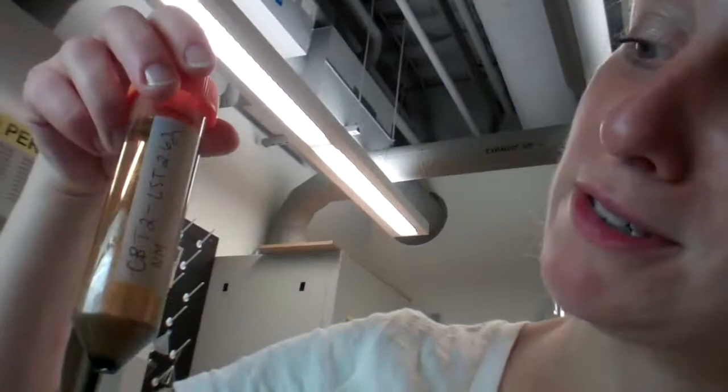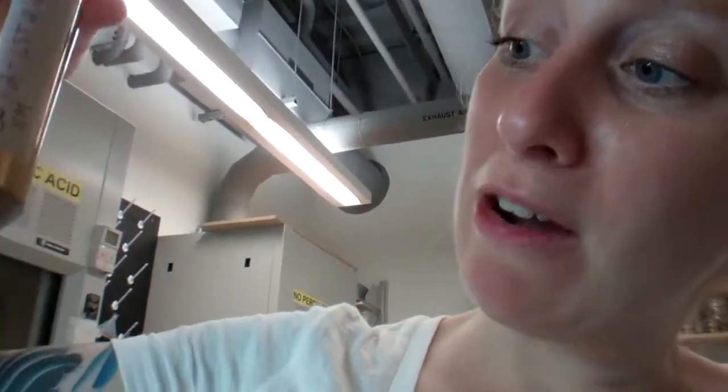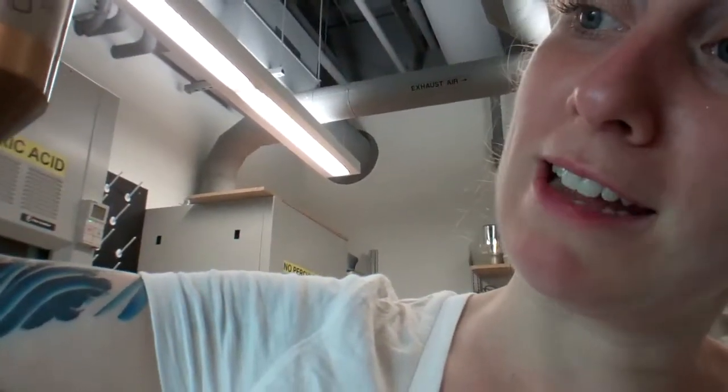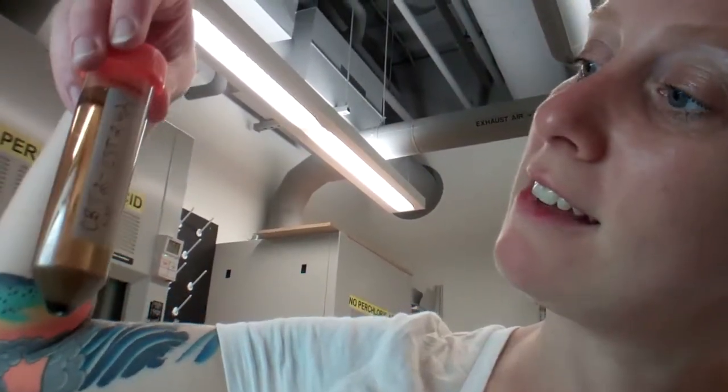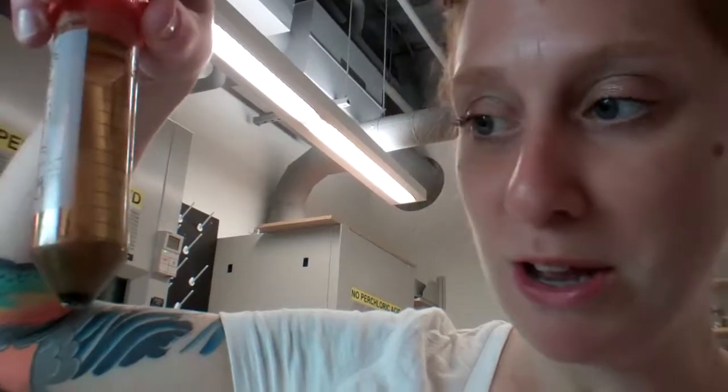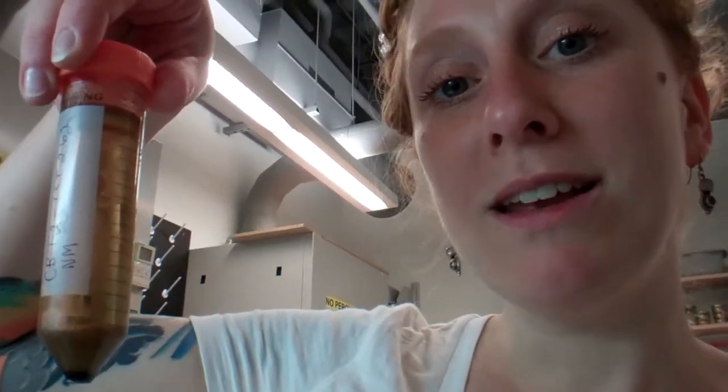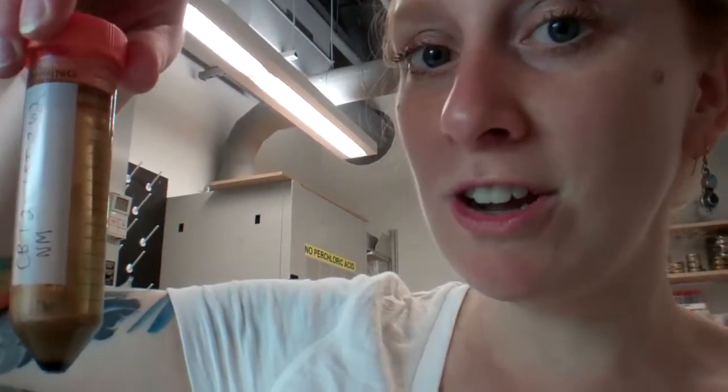Alright, so I have my sample CBT2 which was dry sieved and water sieved after being crushed, and now it's been sitting in LST 2.62. Everything that's more dense than 2.62 is now at the bottom, everything that is less dense is now at the top, so we have to separate these two. And for that we need liquid nitrogen. Get on your goggles folks, it's about to get crazy.